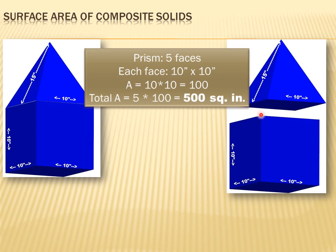But I don't have a top to this base because the pyramid's going to come down and make that top part of the interior of the composite figure. So I've got a total of five sides. The area would be five times the area of each of the individual lateral faces, or a total of 500 square inches.